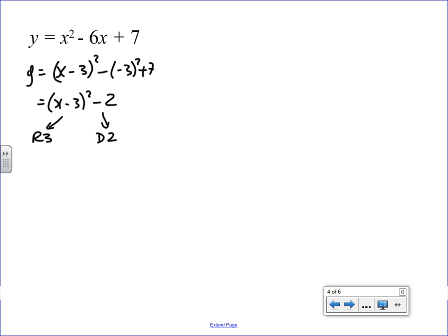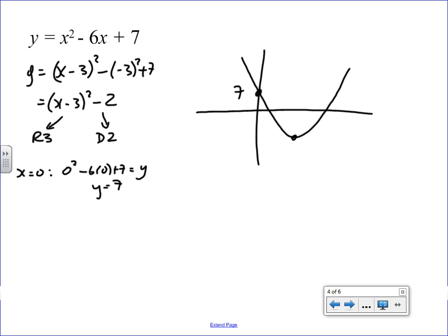I'll do the y-intercept, because that's easy. x is 0, it's 0 squared minus 6 times 0 plus 7, is what y is, so y is 7. So, I already know that I'm going to go right 3 down to, like this, this is going to be 7, this is going to be 3 minus 2. So, now all I need is the roots.